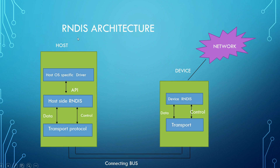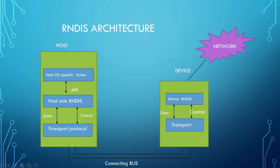RNDIS is a transport specification which states that the transport bus has to provide reliable control and data channels for delivery of network packets between the host and the device. In an RNDIS setup, the responsibility of the host is to initialize the protocol, establish the control and data channel with the Android device, and exchange control and data messages as required by the device.